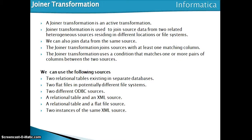Hi all, in this video we are going to discuss Informatica joiner transformation. The joiner transformation is an active transformation and we use it to join two data sources. These two data sources can be from different source systems, different locations, or different file systems, and we can also join data from the same source. To join two data sources we need at least one matching column, and the joiner transformation uses a condition that matches one or more pairs of columns between two sources.